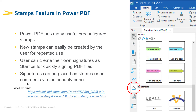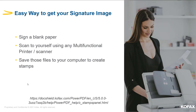Signatures can be placed as stamps or can be placed as comments via the security panel. The online documentation linked here also contains detailed instructions on how to create these stamps. To get started with creating your own signature as a stamp, you need to get the image of your signature onto the PC where Power PDF is installed.